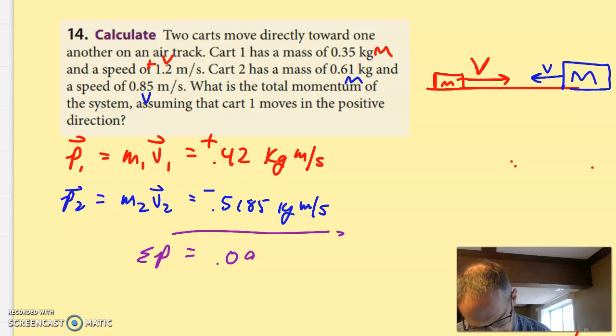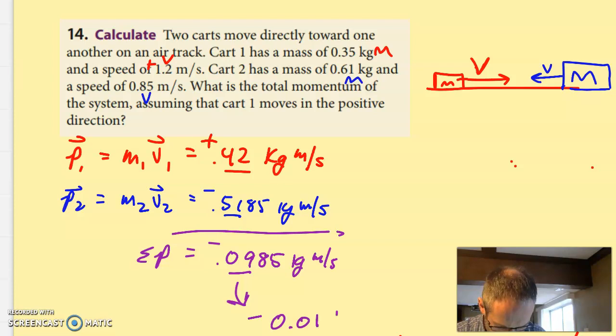If you trace the significant figures through here, two significant figures there, two significant figures here, and both of those were significant to the hundredths place, so this answer is going to be significant to the hundredths place as well. Don't just look at it and make two significant figures because that's a mistake. Negative 0.01 kilogram meters per second for the system.